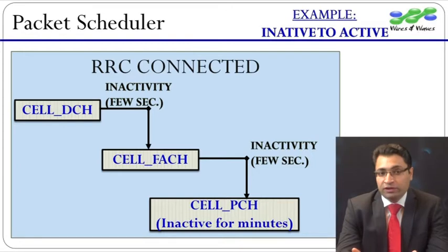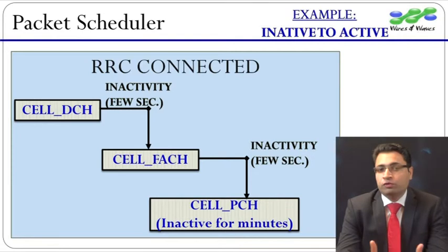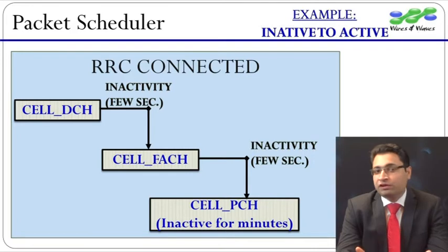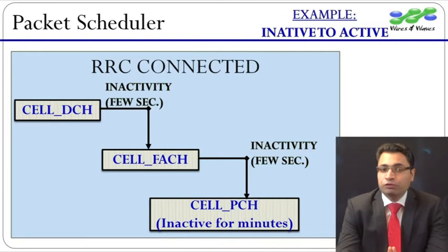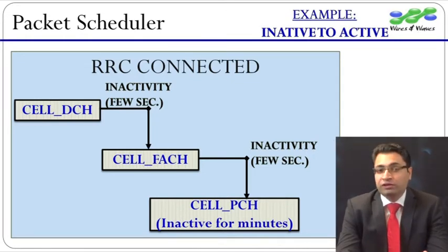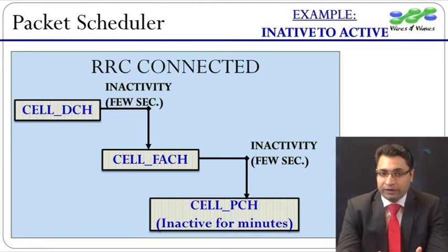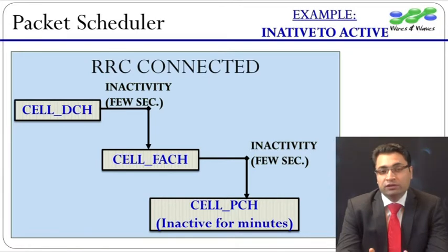On the UE's side, the power consumption in cell PCH is comparable to idle mode. Therefore, the UE also does not mind staying in this connected mode — a power-saving connected mode — even if it does not have any data to send. The feature of cell PCH state also improves end user experience. After a few seconds or minutes, if the UE wants to send or receive data, it can again become active very quickly. In short, the transition time from cell PCH to cell DCH is much quicker than the transition time from RRC idle to cell DCH.